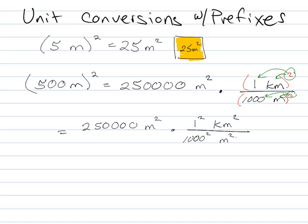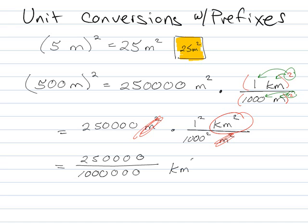And the reason I want to do that, is I want to recognize that the meters are going to cancel out, and it's going to leave me units of kilometers. So that's 25 with four zeros, divided by a thousand squared, so that would be six zeros, kilometers squared.